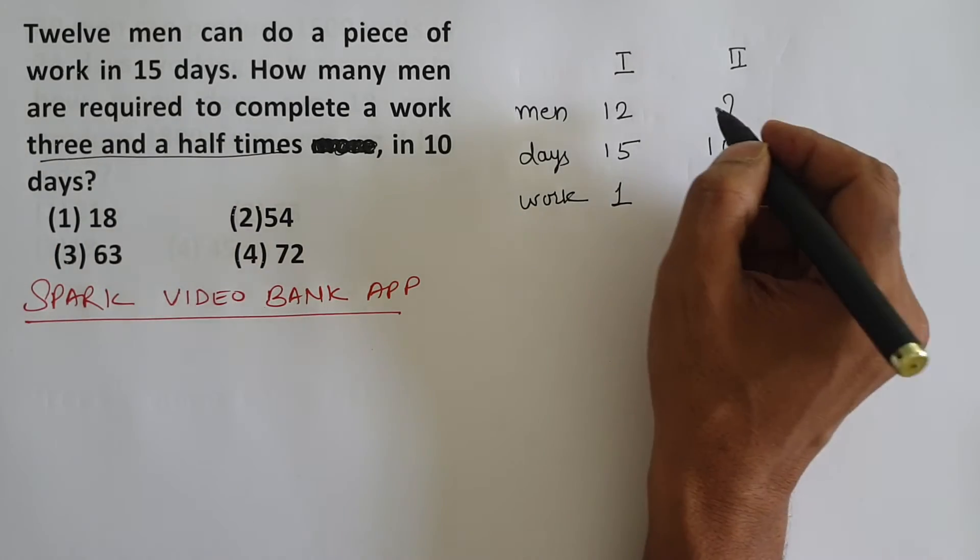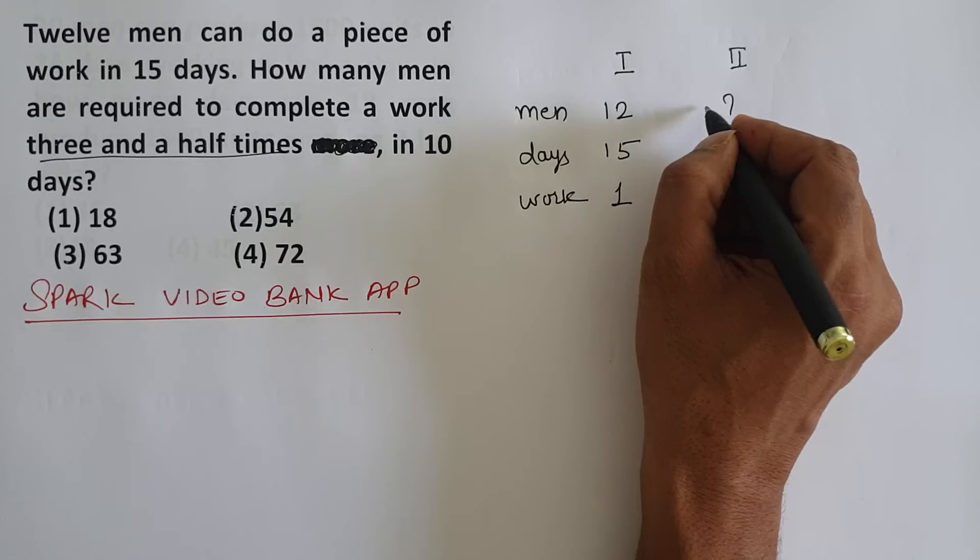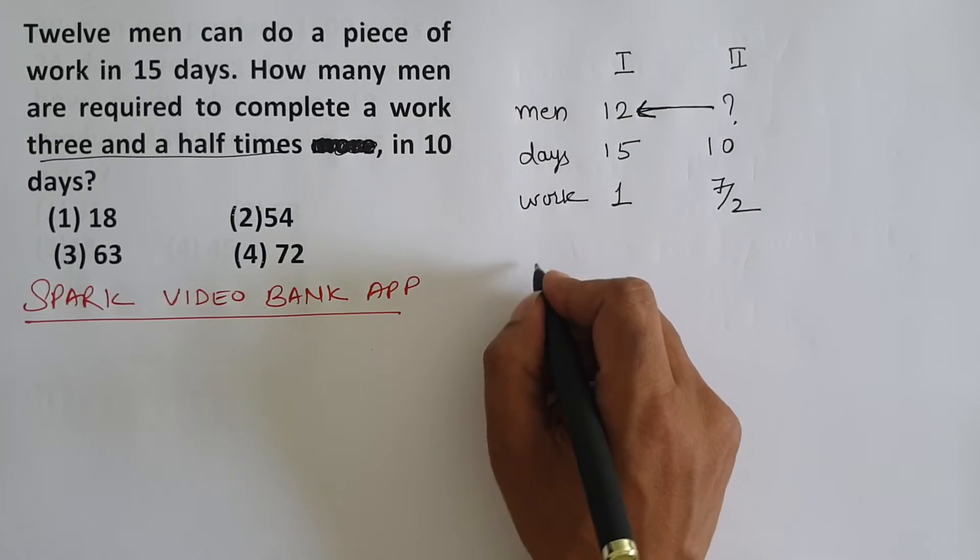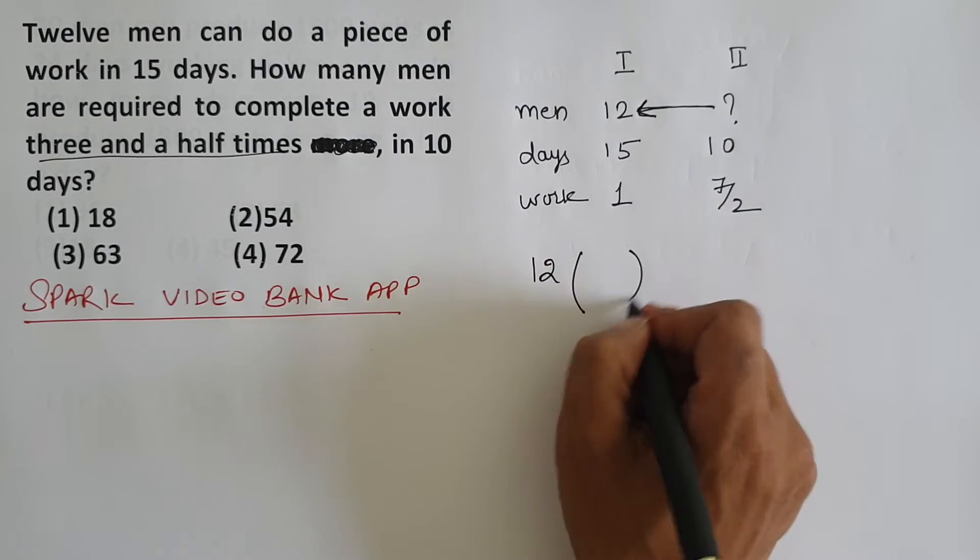Whenever such a question comes, where should we start with variation - the unknown, how much was it in the first case. So, how many men were needed earlier? 12 men were needed.